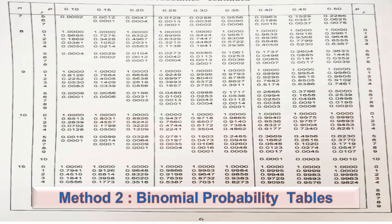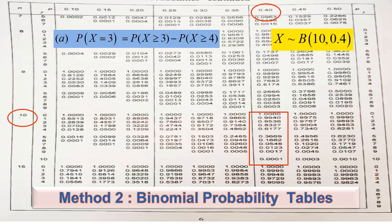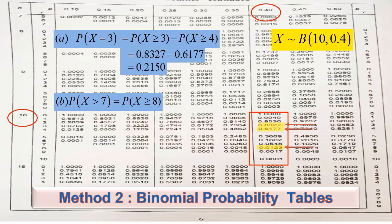Using Method 2, the binomial probability tables: go to the page for n = 10 and p = 0.40 (page 6). For part (a), P(x = 3) = P(x ≥ 3) − P(x ≥ 4), reading from the table gives 0.2150. For part (b), P(x > 7) = P(x ≥ 8), which we can read directly from the table as 0.0123.